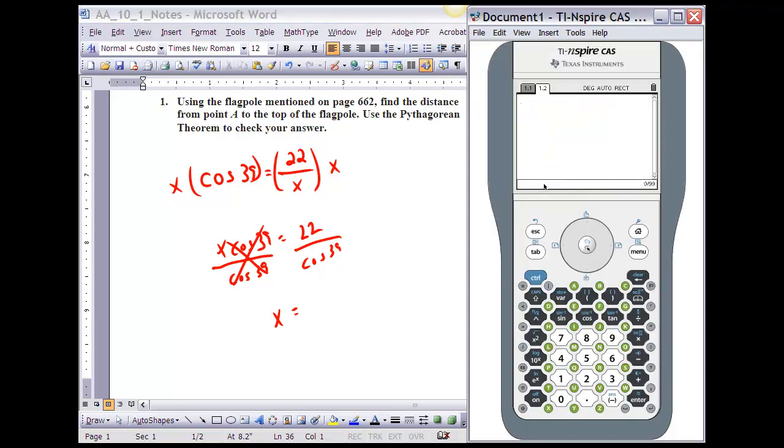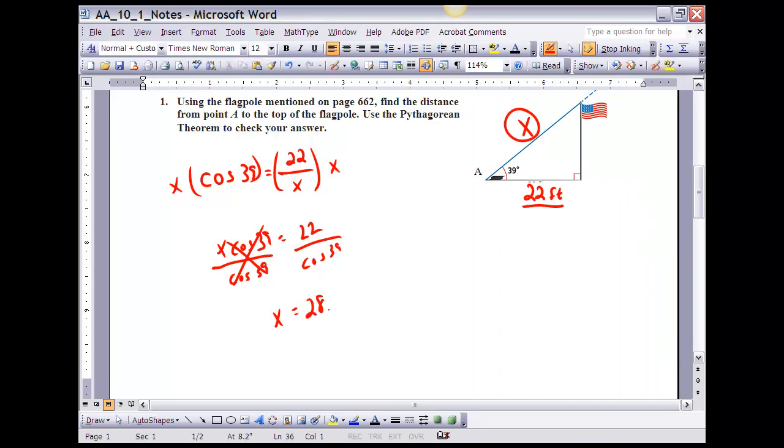Now I can go to my calculator and do that. I know that you've done a little bit of work with sine, cosine, and tangent on your calculator in your physics class. Make sure that you're set at degrees. Go to your system settings. Make sure that it's set on degrees and not radians. So I'm going to take 22 and divide by the cosine of 39 degrees. And you'll notice that I come up with an angle measure of about 28.3 feet. So that's how we can use trigonometry to find the length of a side of a triangle.